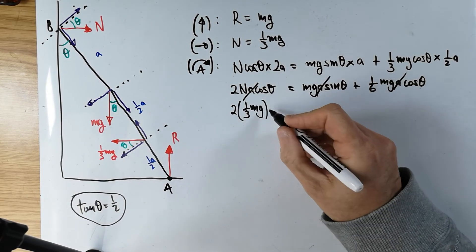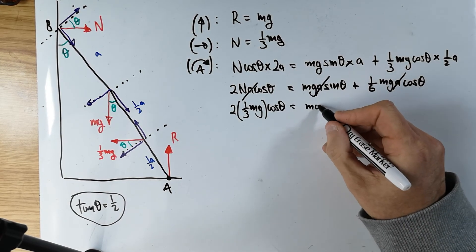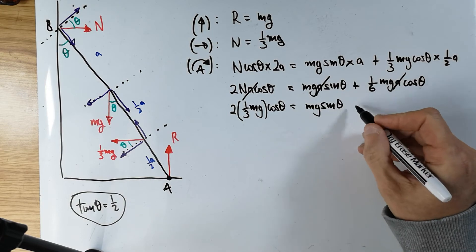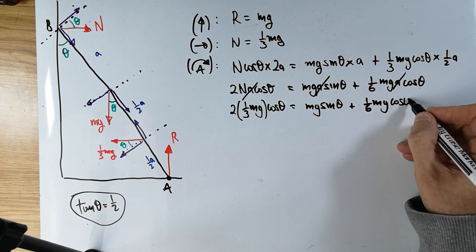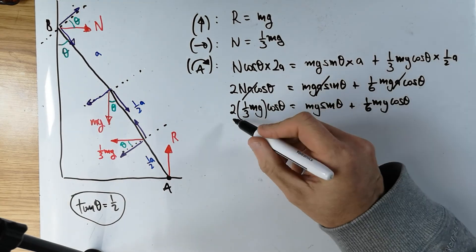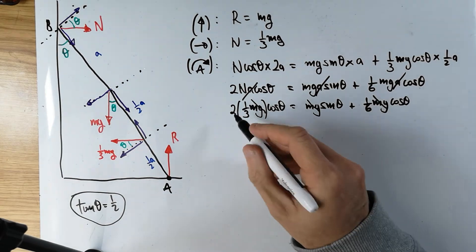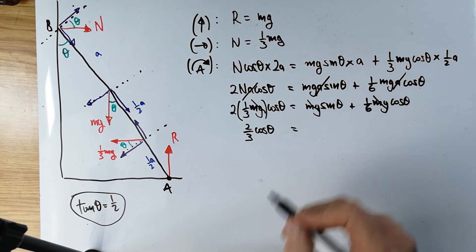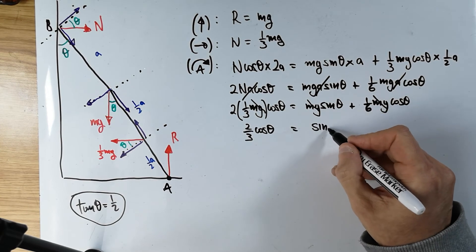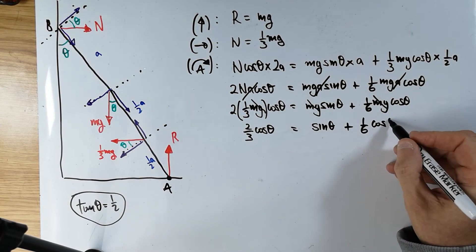So I can replace the two with one third Mg, that's my N, close bracket cos theta, is equal to Mg sine theta, plus one sixth Mg cos theta. Now I can do exactly the same thing. Mg, Mg, Mg, all cancelled. So I've got two thirds cos theta, is equal to sine theta, plus one sixth cos theta. That's much nicer.